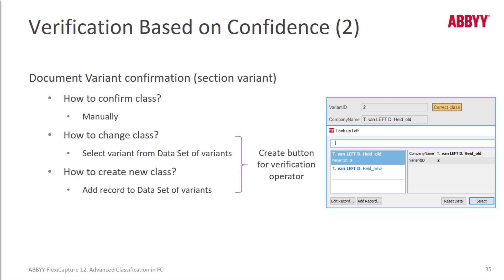To create a button in your docdef, create a service field that is linked to the Flexible Section Variant ID option. Then create a database check rule that is linked to the dataset of variants source and save the ID to this service field. Then create a button on the data form and link it to the database check rule you just created. The verification operator can then click the button and open a dialog during verification that allows changing of a class or even adding a record to the dataset of variants — in other words, creating a new class.